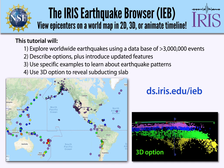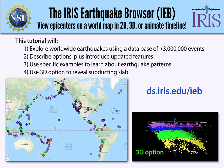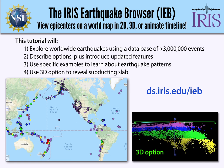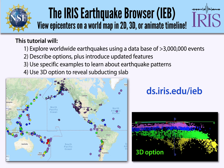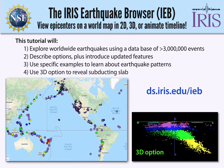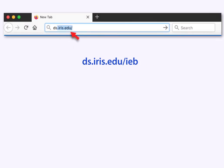Hi, I'm Wendy Bohan from the Incorporated Research Institutions for Seismology. The IRIS Earthquake Browser, or IEB, is a web-based tool that allows you to look at worldwide earthquakes and filter them based on your specific learning objectives and goals. Let's get started. Type this URL into your web browser: ds.iris.edu/IEB.